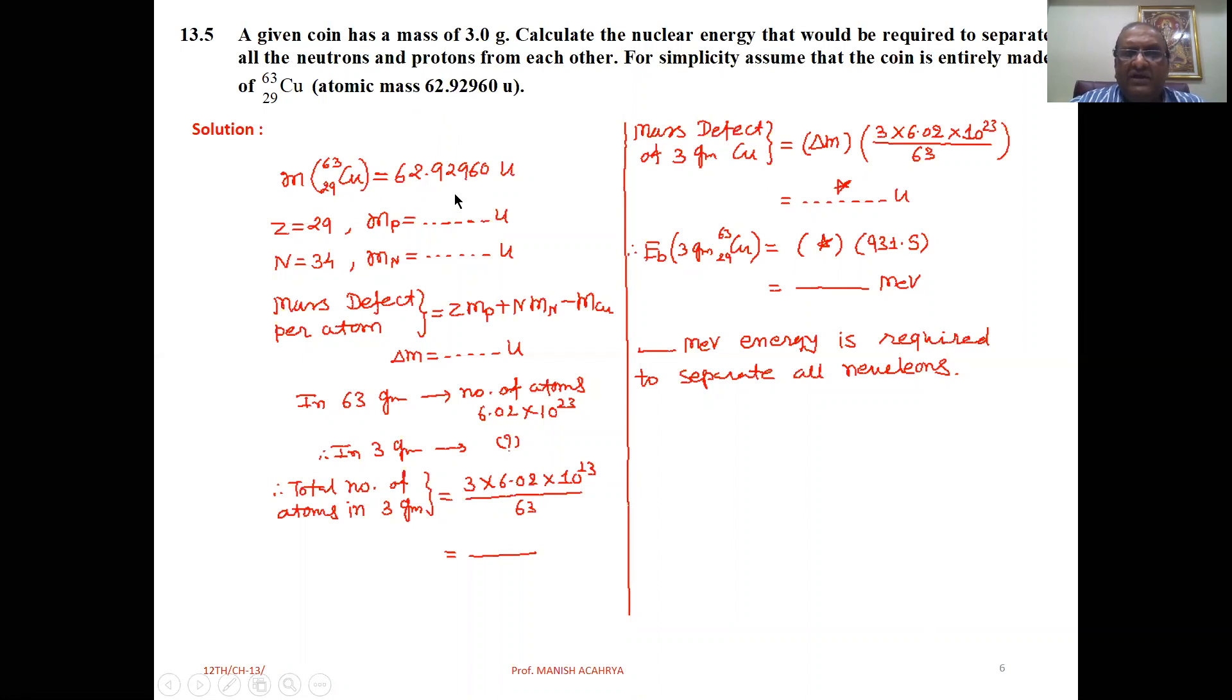The atomic mass of Cu is 62.92960 U, which is given to you. In copper, the number of protons is 29. 63 minus 29 equals 34, which is the number of neutrons. The mass of proton and mass of neutron are always given to you.